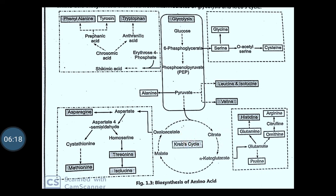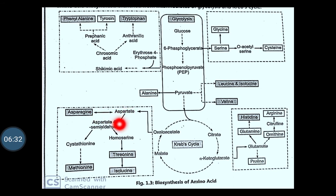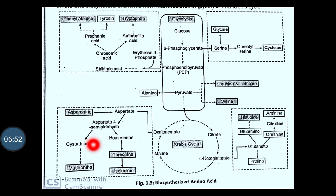Another component formed is oxaloacetate, which acts as a precursor for the biosynthesis of aspartate and it will form asparagine. From asparagine, the biosynthesis of aspartate-4-semi-aldehyde takes place, and from this, the biosynthesis of homoserine — that is, threonine and isoleucine — get biosynthesized. Again, methionine will get biosynthesized from the precursor oxaloacetate. From the pyruvate, biosynthesis of alanine will also take place.